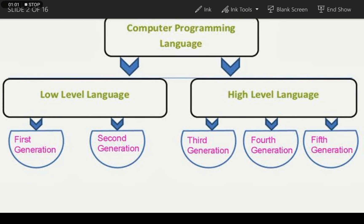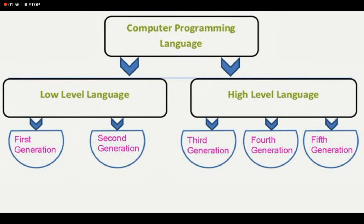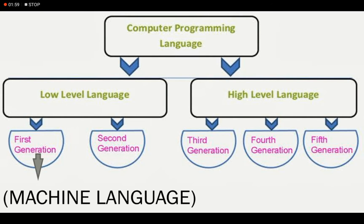As we know, a computer can only understand machine language, and all other languages — 2nd generation, 3rd generation, 4th generation, and 5th generation — need to be converted into machine language. The 1st generation language is also considered machine language. This is an important point we discussed in the previous video.